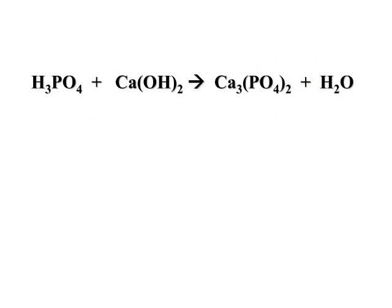Moving on to another reaction. Assuming all our formulas are correctly written, we'll first balance our metals. One calcium on this side, three calciums on the other. Moving on to our polyatomic ions: one phosphate, two phosphates — put a two in front of the compound containing the phosphate.